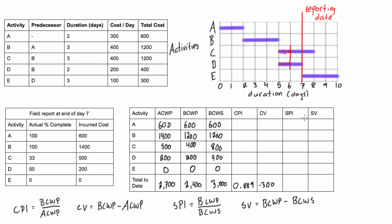Neither CPI nor CV says anything about whether the project is ahead or behind schedule — that's what SPI and SV are for. Schedule performance index (SPI) equals BCWP divided by BCWS: 2,400 divided by 3,000 gives 0.8. An SPI less than 1 means the project is behind schedule. Schedule variance (SV) equals BCWP minus BCWS: 2,400 minus 3,000 gives negative $600.